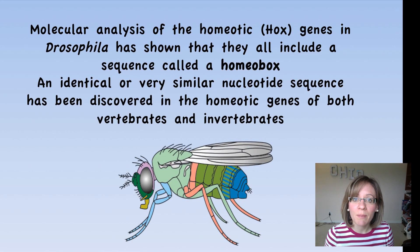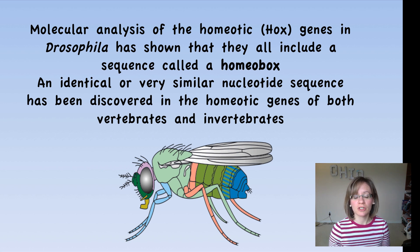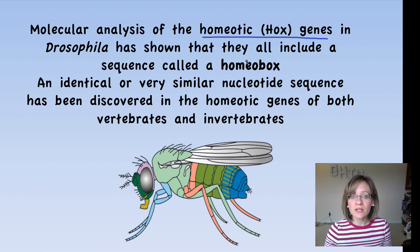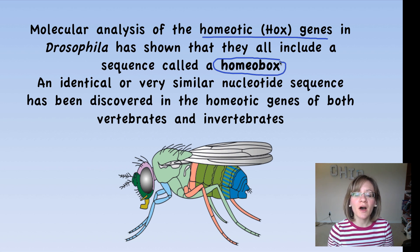The model organism that biologists use, we call them evolutionary biologists, is again Drosophila. Remember we looked at this fly when we did genetics. And so they've done a lot of molecular analysis on this, and they have found these homeotic genes, also called Hox genes, and that all of these Hox genes contain a sequence called a homeobox. And this homeobox is so highly conserved across all species.